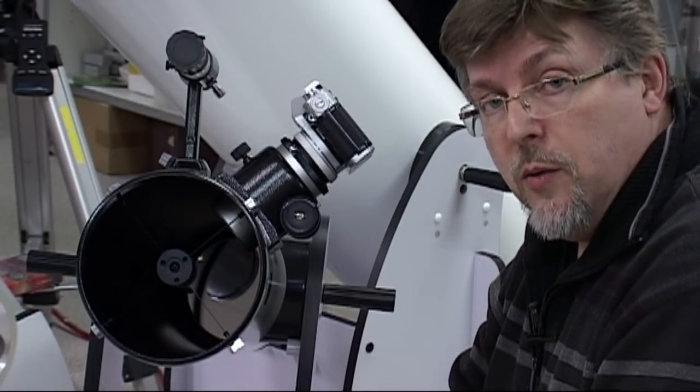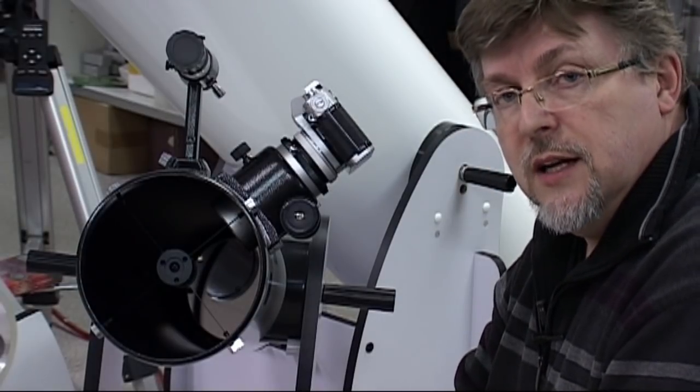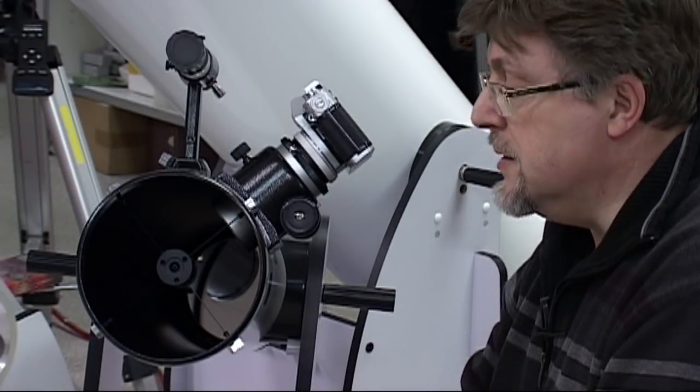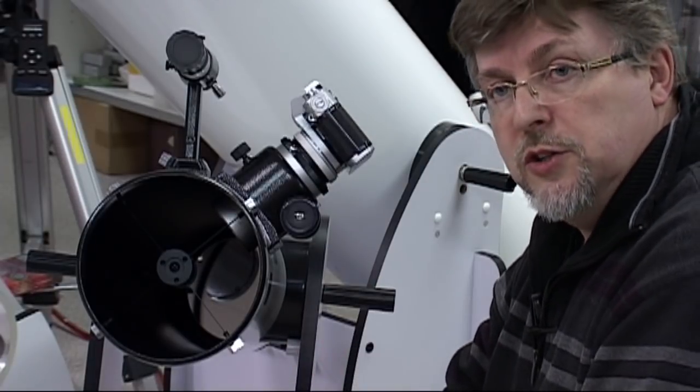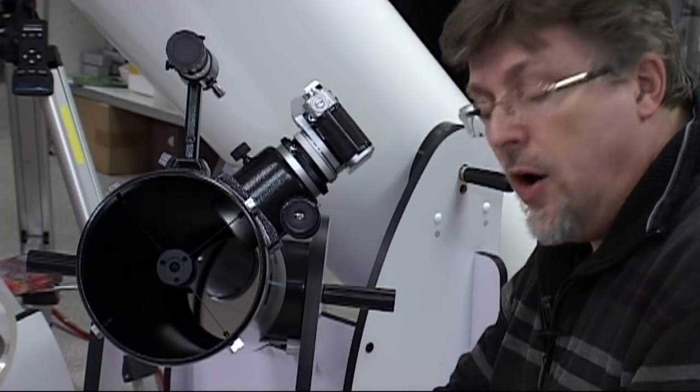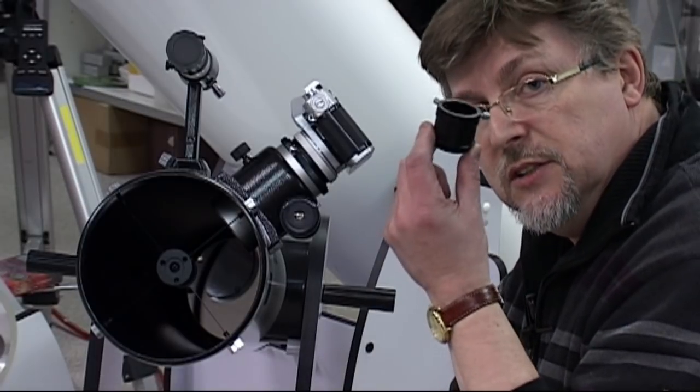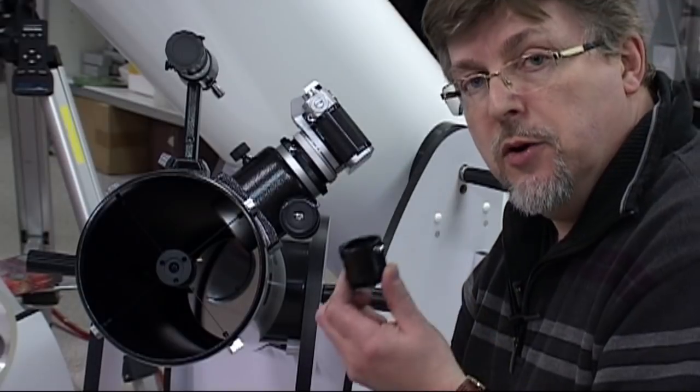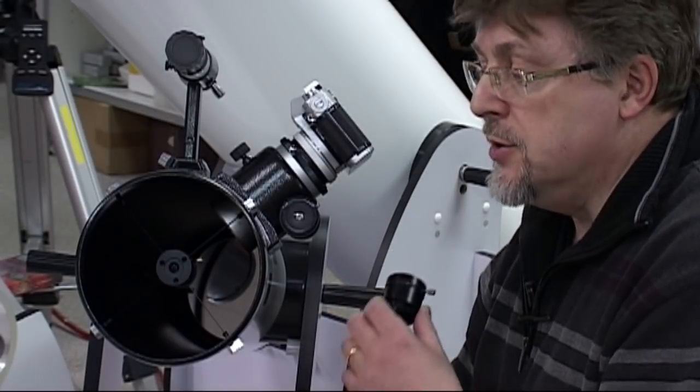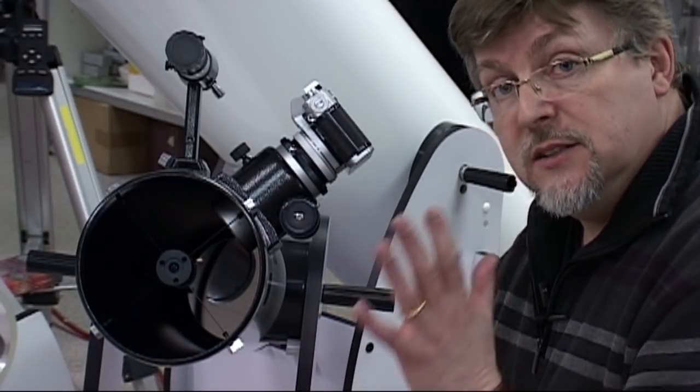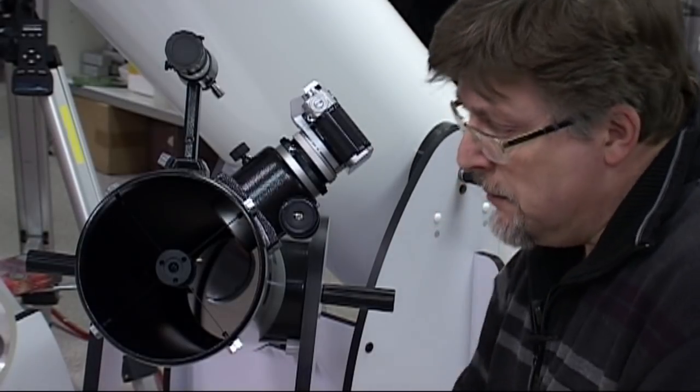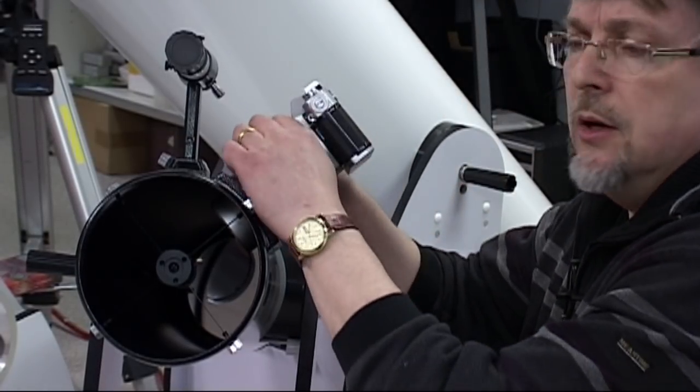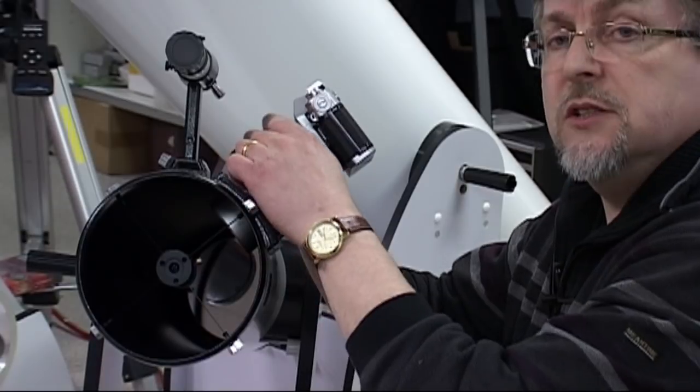But what about everybody else that might be using a telescope with a non Sky Watcher brand or a telescope that hasn't got one of these removable extensions? Obviously take a close look at your telescope - if there's a focuser component you can remove to enable you to get the camera closer, that's a potential solution. But what about in situations where you're not that fortunate?